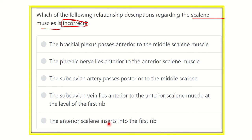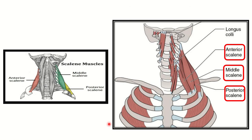There are three scalene muscles. Here we can see the first rib, second rib, and the vertebral column. From the vertebral column, the anterior scalene arises and inserts into the first rib. The middle scalene also rises from the vertebrae and inserts into the first rib behind the anterior scalene.